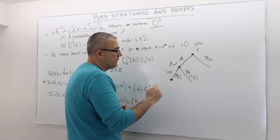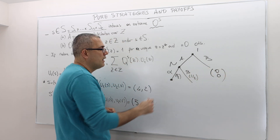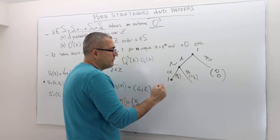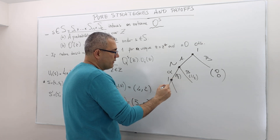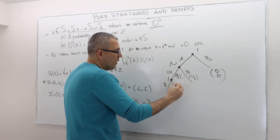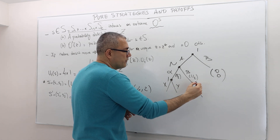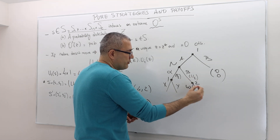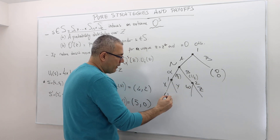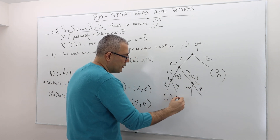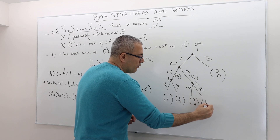If the alpha branch is taken, the game ends with payoff (0, 0). If the beta branch occurs, player one moves again and chooses between X and Y. If instead player one had played B, then player two moves and chooses between W and Z. The payoffs at the terminal nodes are (1,1), (2,2), (3,3), and (4,4).